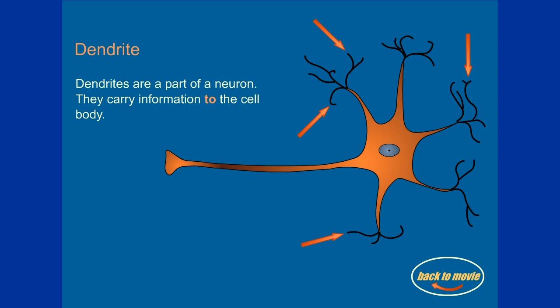Dendrite. Dendrites are part of a neuron. They carry information to the cell body.